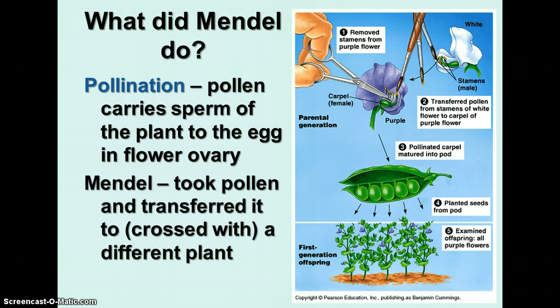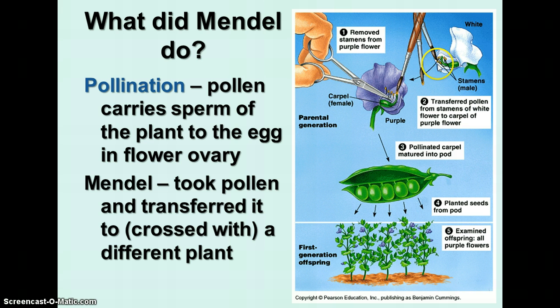What did he do? He pollinated the flowers. Pollination is transferring the pollen from one flower — or one part of a flower — to the ovary of another flower or part of a flower. In the case of peas, what he did was remove the stamens from the purple flower. He was crossing purple flowers and white flowers to begin with, and so he removed the stamen, which is where the pollen is produced, from the purple flower.